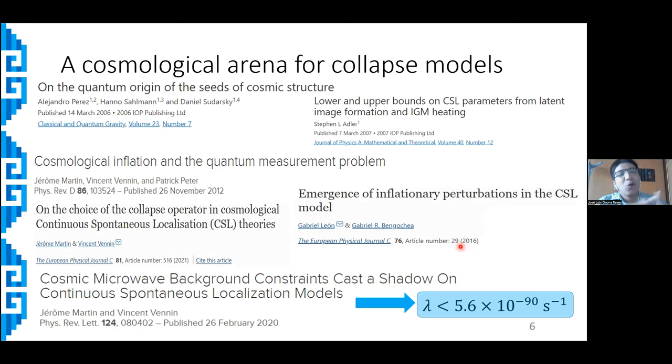Having said this, one of the scenarios that has been considered to further constrain these parameters is related to cosmology. In particular, some authors have proposed to consider the effect of these dynamical collapse models on scalar perturbations within an inflationary context. However, I should mention some things before. First, up to date, there is not a satisfactory generalization of collapse models within a relativistic scenario.